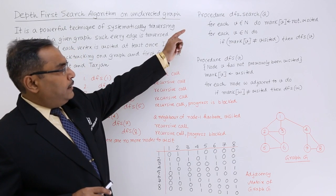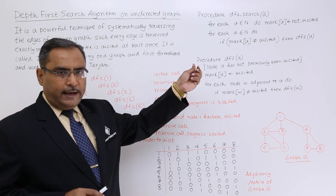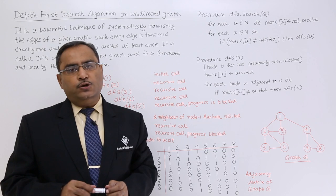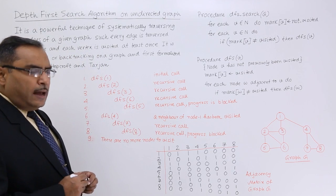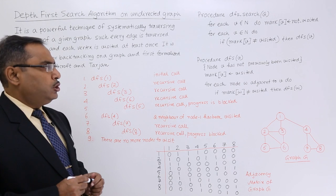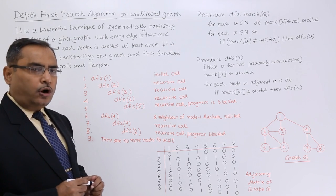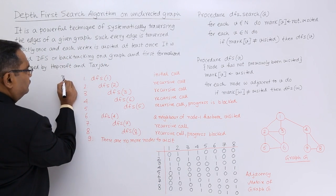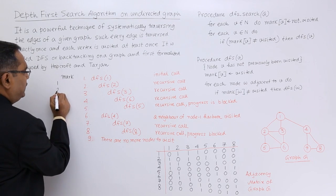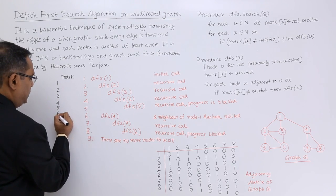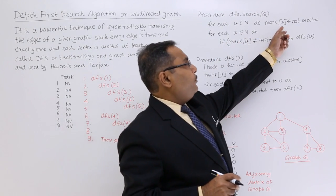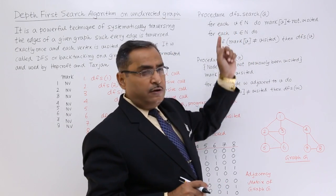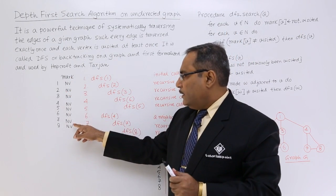In algorithm DFS, the graph is taken as input. For each vertex v belonging to n, mark of v is set to 'not visited'. This means we have a mark array with 8 locations, all initialized to 'not visited' (false). The first for loop initializes this mark array in that way.